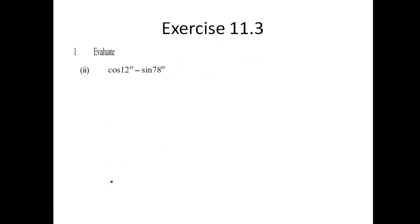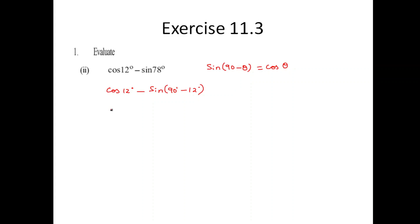Let's look at the next sum. What is the relationship I need to use here? I will be using sin(90 minus theta) equal to cos theta. I am writing cos 12 minus sin of (90 minus 12). When I am subtracting 12 out of 90, the resultant is sin 78. So this becomes cos 12 minus cos 12, and the overall value is 0.